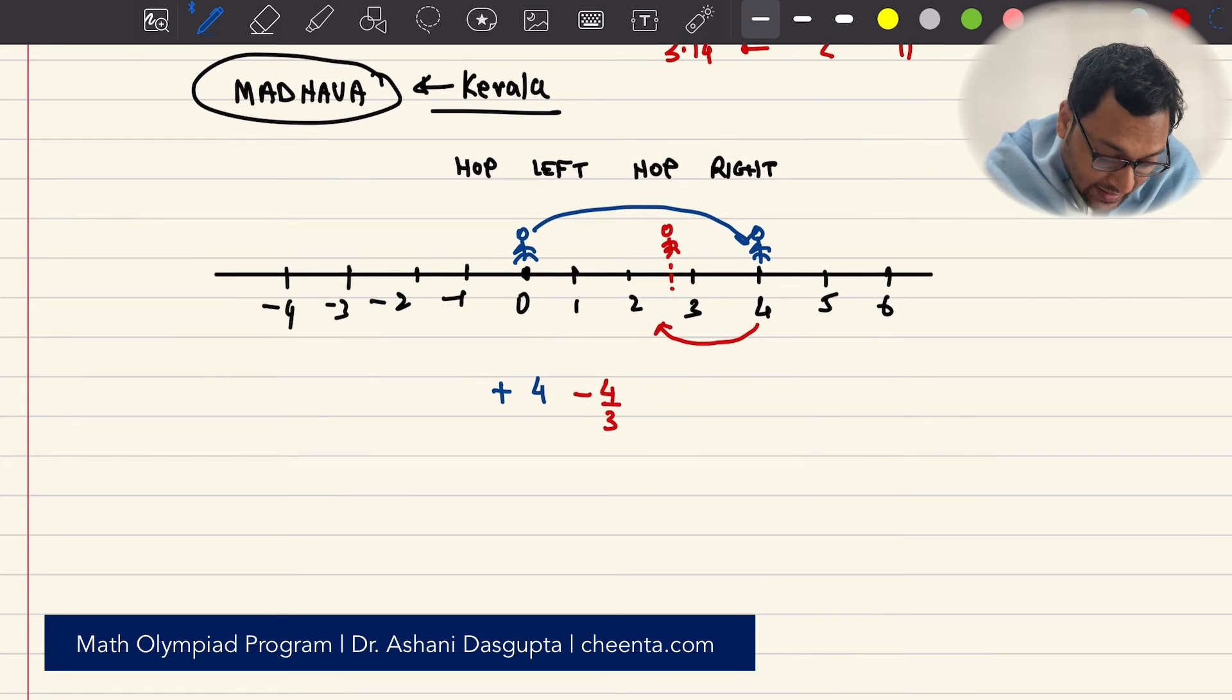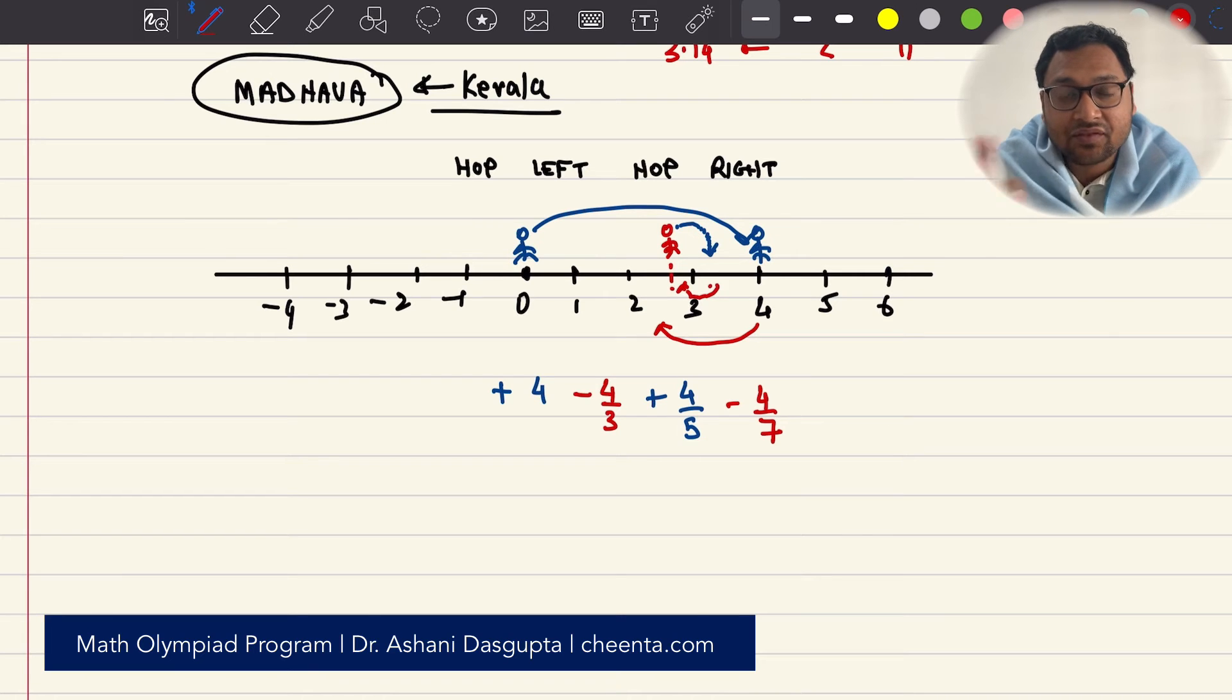Now, you do hop to the right, 4 fifths. So, you go this way, 4 fifths. Somewhere here. Then, hop to the left, 4 sevenths. And you see, he is continuously moving right and left, right and left. He is doing that. This is very weird.